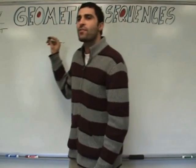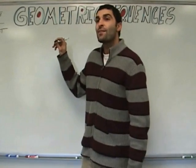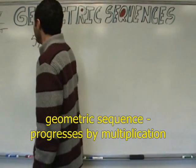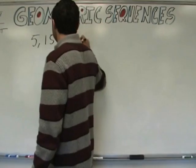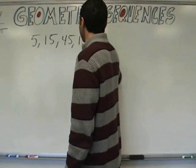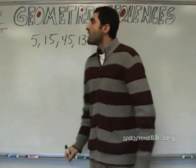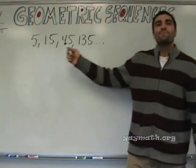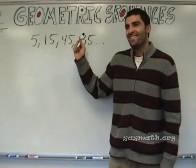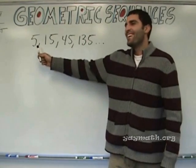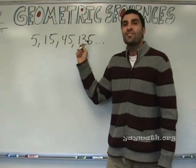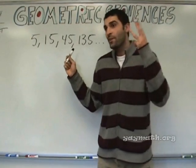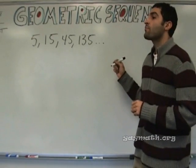The basic premise behind geometric sequences is that it's a sequence that progresses with multiplication. Observe. Those are progressing by five... by three... times three. Is each term multiplied by three? Is each term in the sequence progressing by multiplication? Yes it is. And what is that common term? Three. The common ratio.